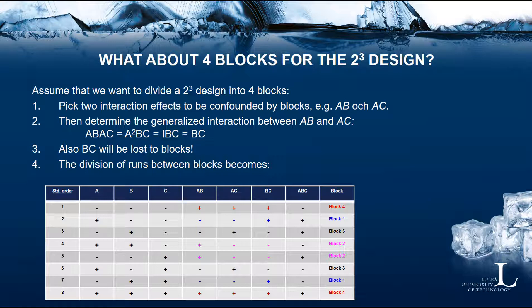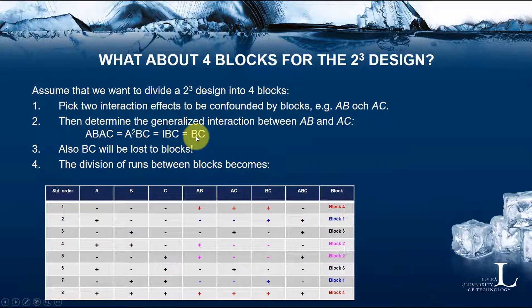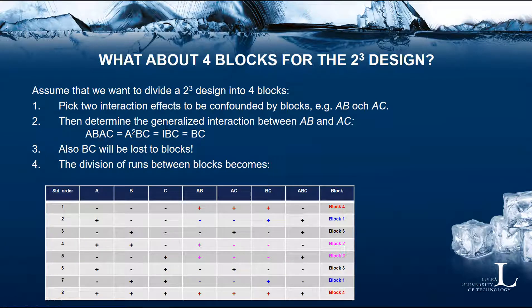What about the situation with four blocks for the 2³ design? We need to pick two interaction effects to become confounded with blocks — A-B and A-C in this case — and we call these the two block generators. We then determine the generalized interaction between A-B and A-C by multiplying them together: A²BC equals IBC equals B-C. So the B-C interaction will also be lost to blocks. The division of design runs between blocks is then determined by the combinations of plus and minus signs for A-B, A-C, and B-C. There are four such combinations, giving us four blocks.